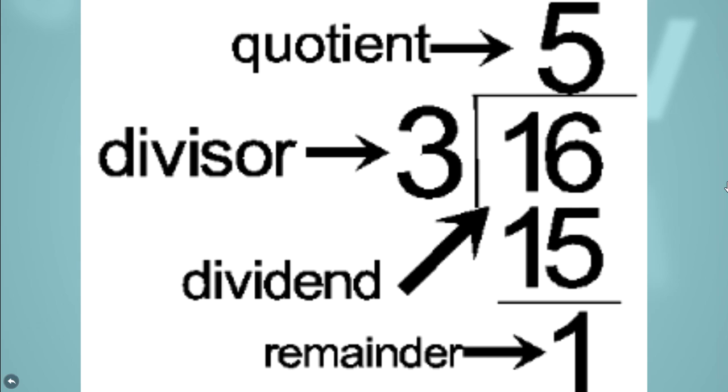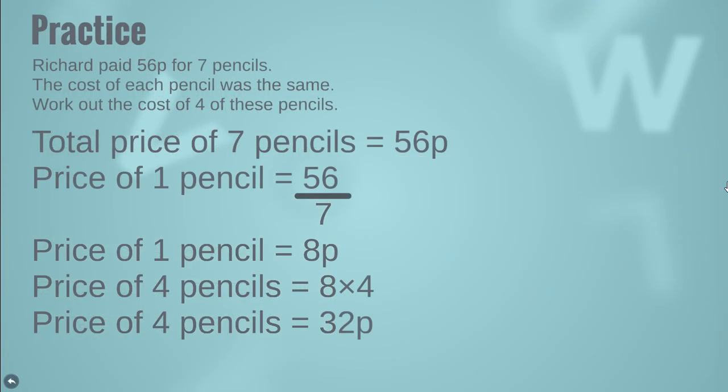Here is a practice question: Richard paid 56 pennies for 7 pencils, each costing the same. Work out the cost of 4 pencils. The total price for 7 pencils is 56 pennies, so the price of one pencil is 56 ÷ 7 = 8 pennies. To find the cost of 4 pencils, we multiply 8 by 4, which gives us 32 pennies.